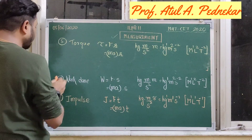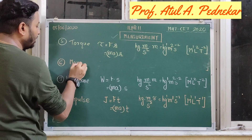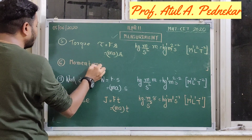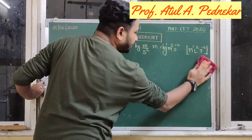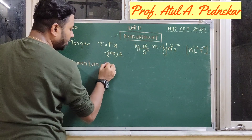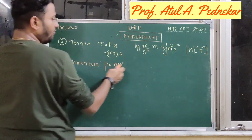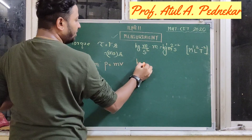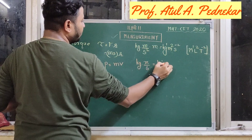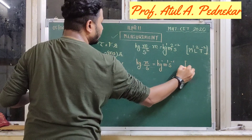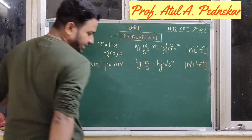After torque, the next physical quantity is momentum — specifically linear momentum. Momentum is denoted by p and is calculated as mass into velocity. The unit for mass is kg, and the unit for velocity is meter per second. So we get kg1, meter1, second inverse. The dimensions are M1, L1, and T to the power of minus 1.